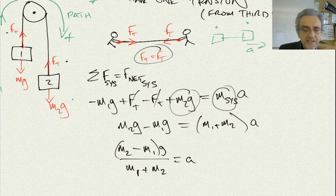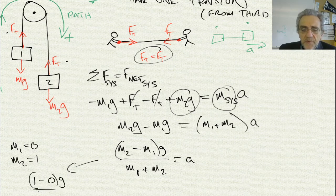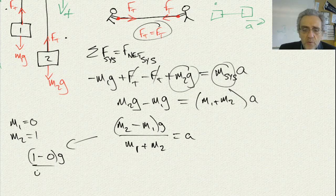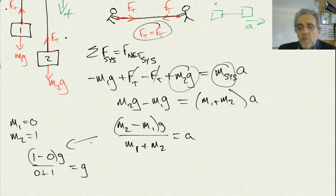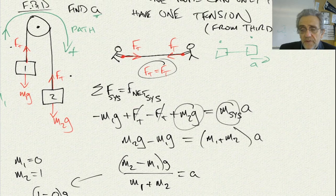Let's test this out with an edge case: let M1 equal 0 and M2 equal 1. From the equation, that would be (1 minus 0) times G divided by (0 plus 1), which is 1 times G divided by 1, which equals G. So the acceleration of mass 2 would be G going down — and that makes sense if mass 1 is equal to zero.